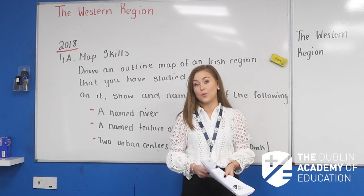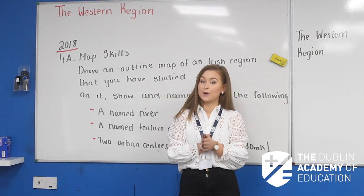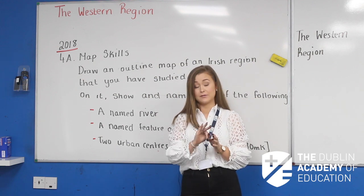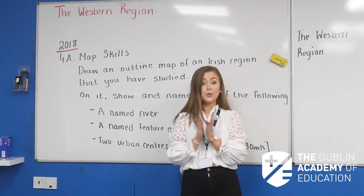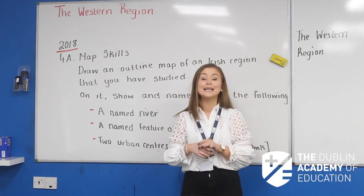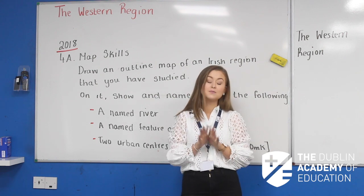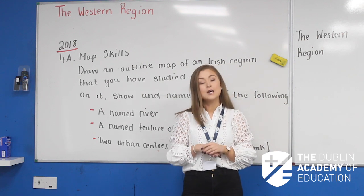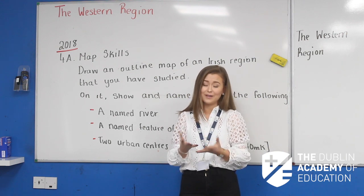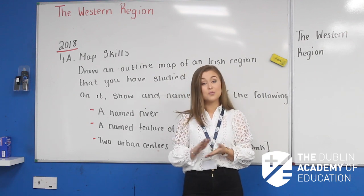Now incorporated in the western region are three counties. As you'll see if you've flipped over to page number two, there are three counties within the western region: that is Galway, Mayo and Roscommon. Please do not get it mixed up with the BMW — we're going to stick with the western region because the GDA is our main region and this is our second or backup plan in case we're asked to compare and contrast. The western region consists of approximately 20% of the land area in the Republic of Ireland but only contains about 10% of the population, which is a main characteristic of a peripheral region.